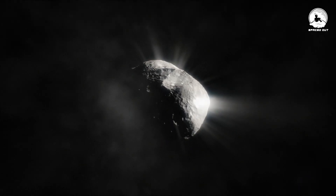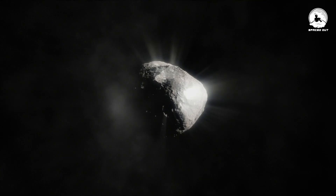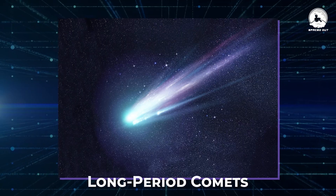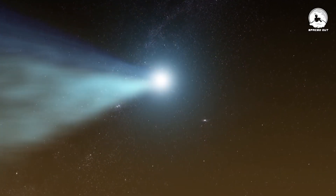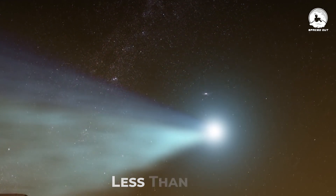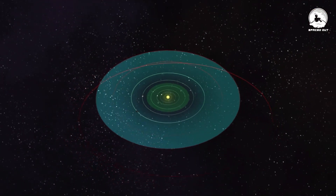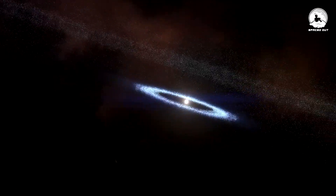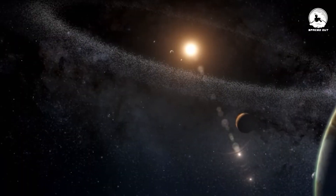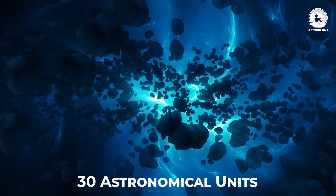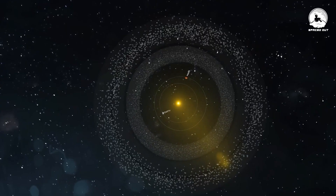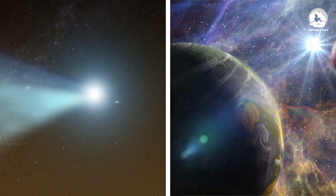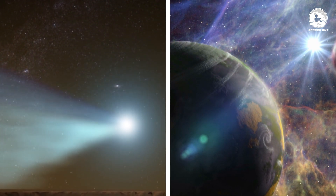Comets can be broadly categorized into two main classes: short period comets, also known as elliptical comets, and long period comets. Short period comets, with orbital periods of less than 200 years, are generally believed to originate from either the Kuiper Belt or the scattered disk. These are two linked flat disks of icy debris located beyond Neptune's orbit, extending from 30 astronomical units to beyond 100 AU from the sun. Short period comets share the same plane as the planets and have relatively stable orbits.